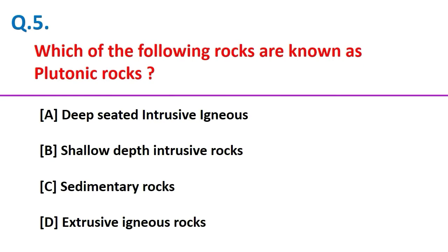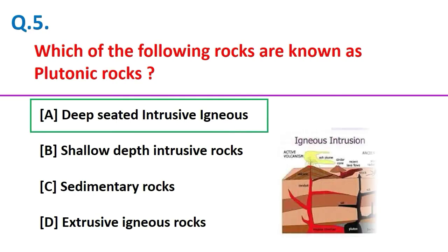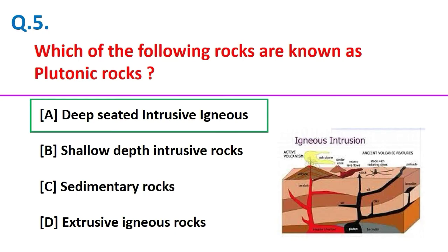Which of the following rocks are known as plutonic rocks? Plutonic rocks are deep-seated intrusive igneous rocks.